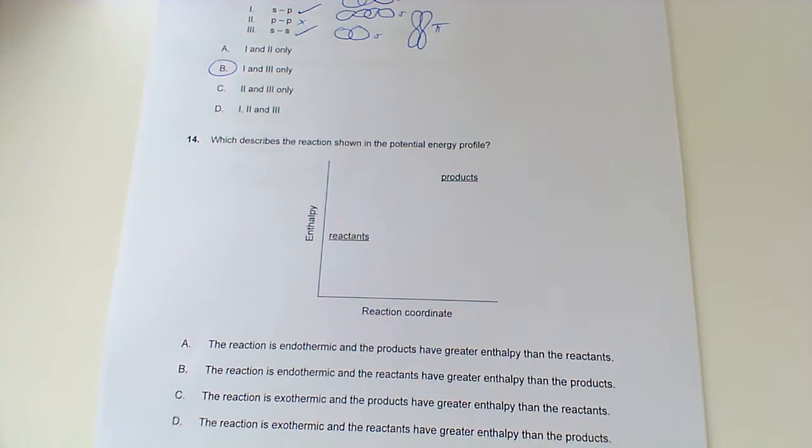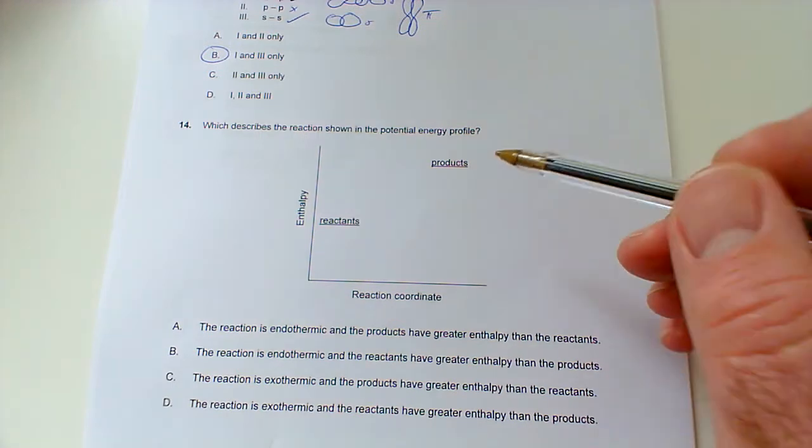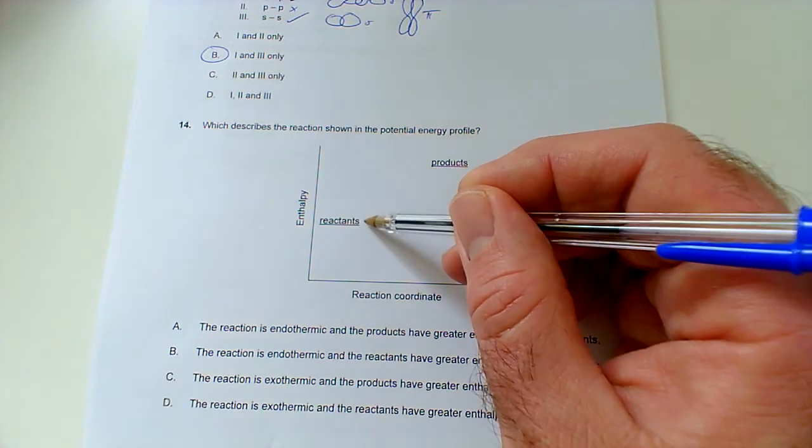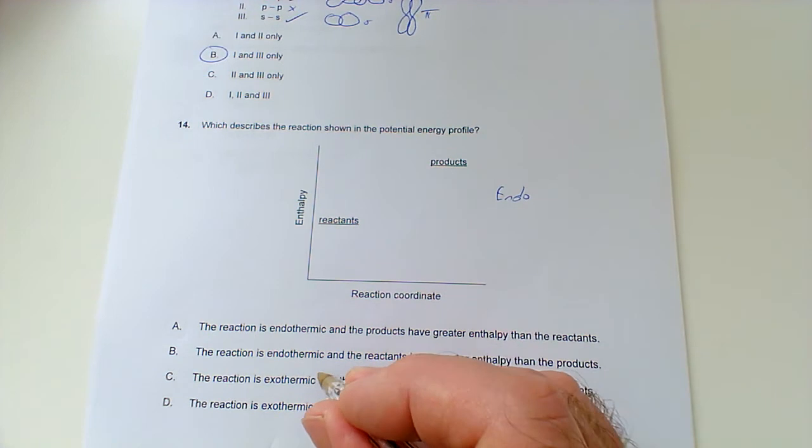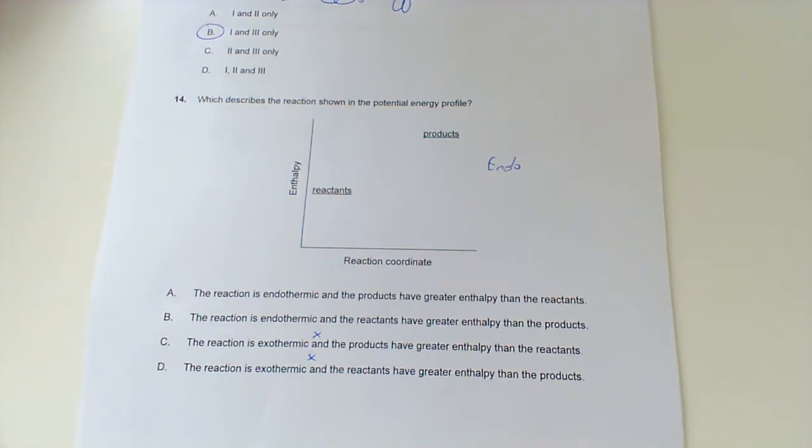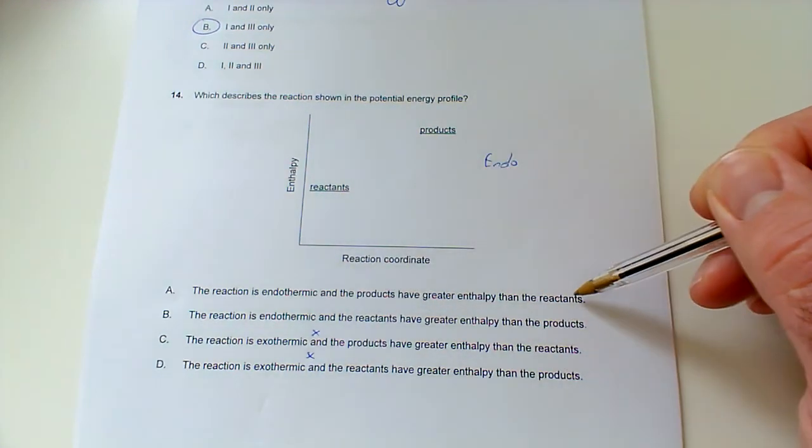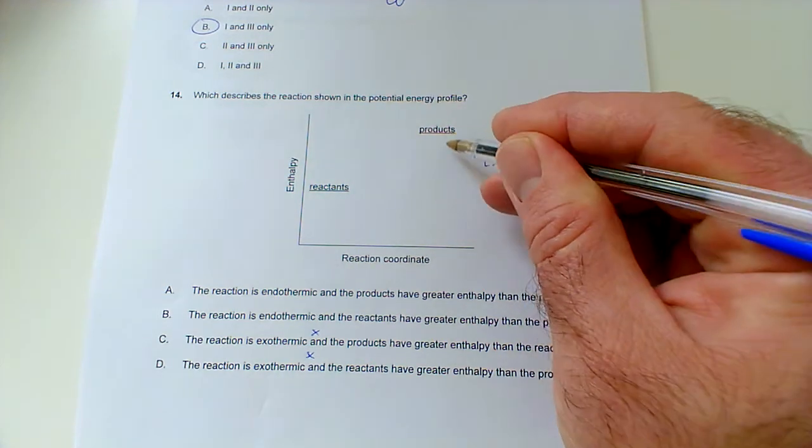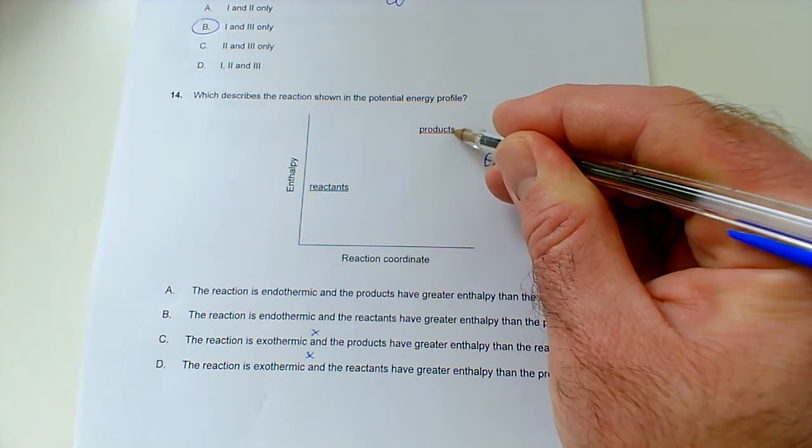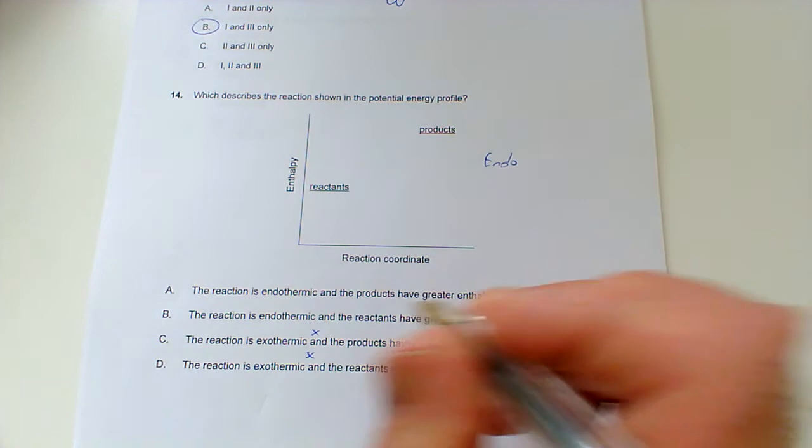Question 14: which best describes the reaction shown in the potential energy profile? We can see the products are at higher energy than the reactants, so it's endothermic. So we can rule out that one and that one. The products have greater enthalpy than the reactants - well, yes they are. The products are higher in energy or at a higher enthalpy than the reactants, so we're going to go with this one.